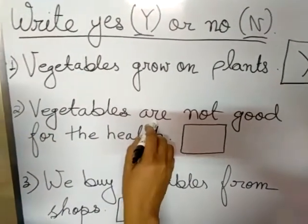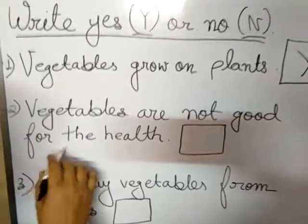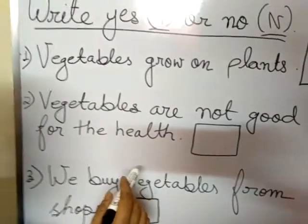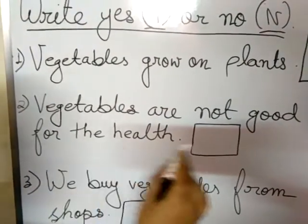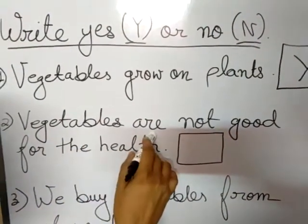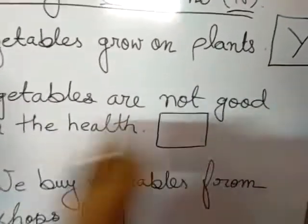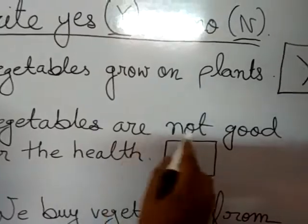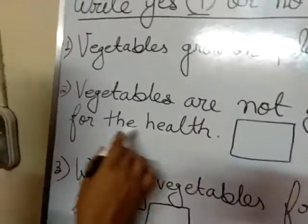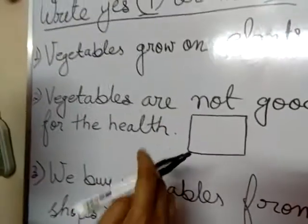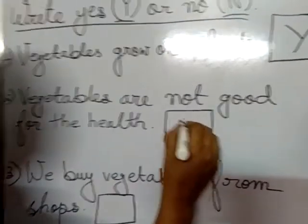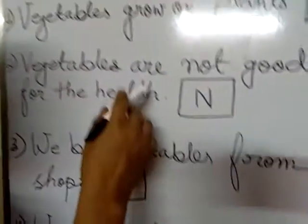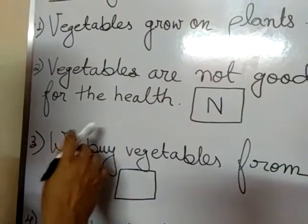Number two: Vegetables are not good for the health. Is it yes or no? No. Because vegetables are always good for the health. This statement is false, so you write N here. Remember, vegetables are always good for the health.